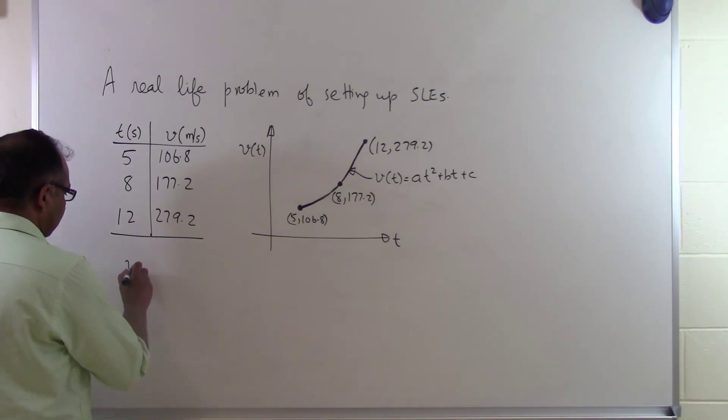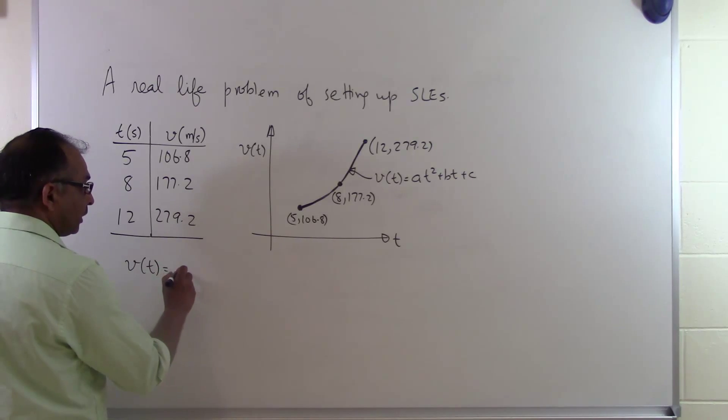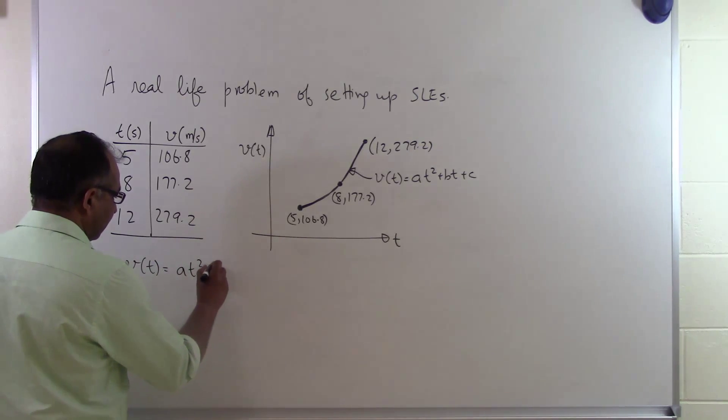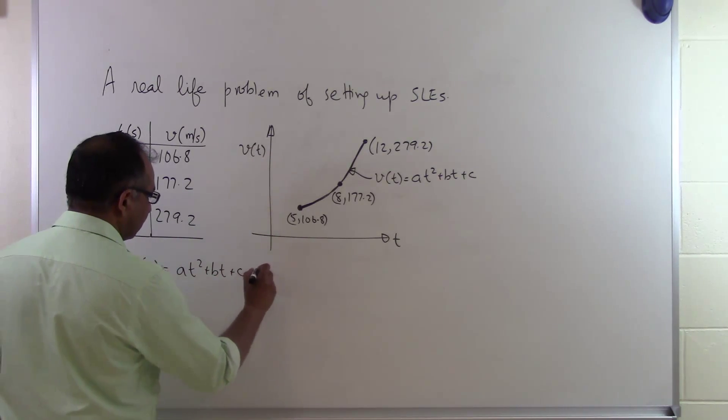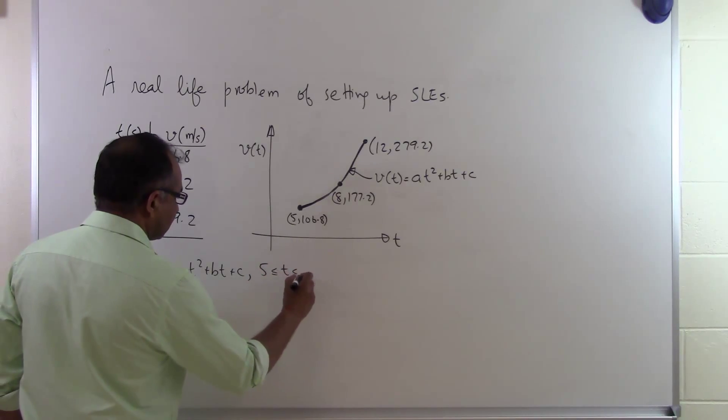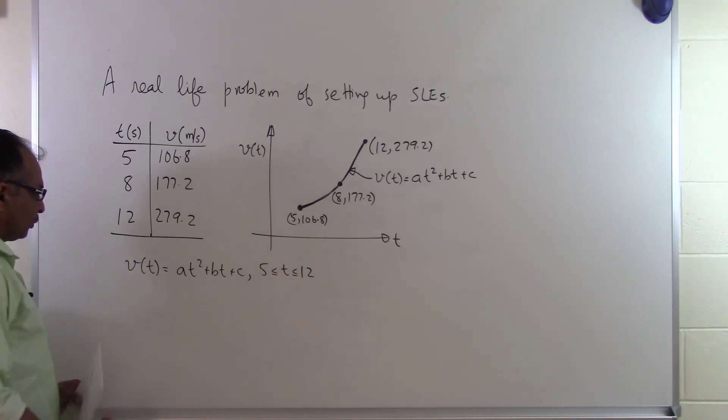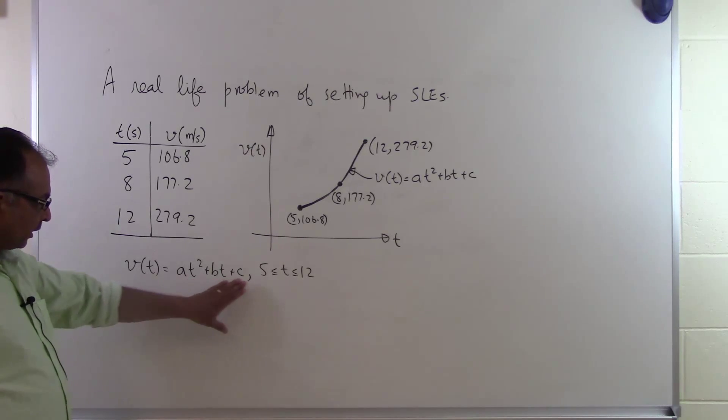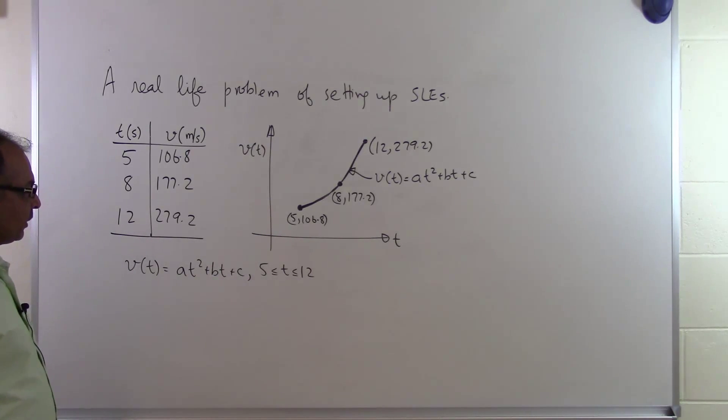Our velocity profile or interpolant will be at² + bt + c, 5 ≤ t ≤ 12. Whenever you write an interpolant for discrete data, you must also give the domain in which that particular interpolant is valid. If I can find this velocity profile, I will be able to find the velocity at any point between t = 5 and t = 12 seconds.